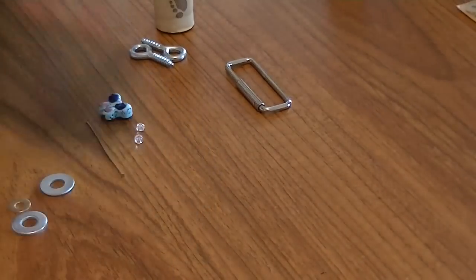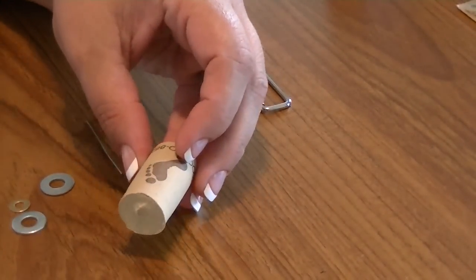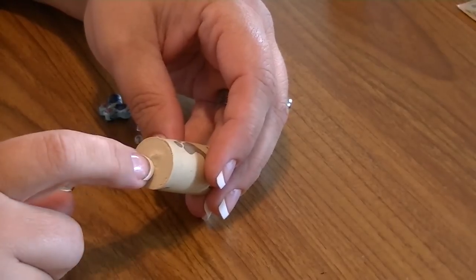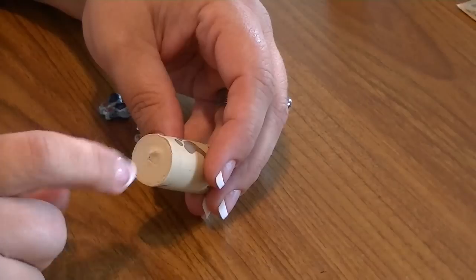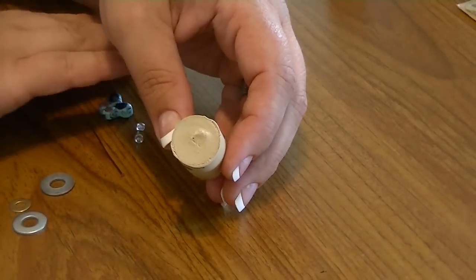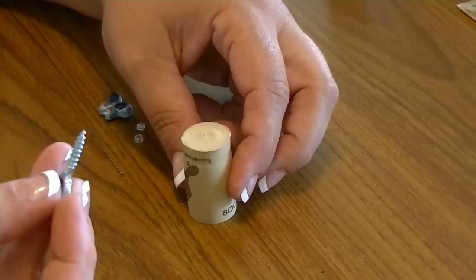Okay, so let's get started. The first thing you're going to do is grab your cork. If you're lucky you'll have a hole already started from where the corkscrew was put in, but it really doesn't matter. This is very easy to do. So you're going to take an eye bolt.